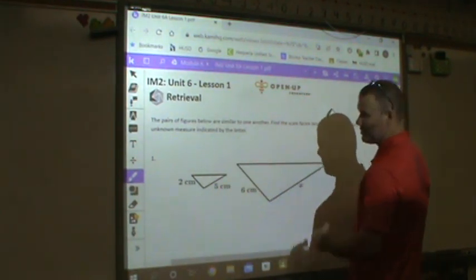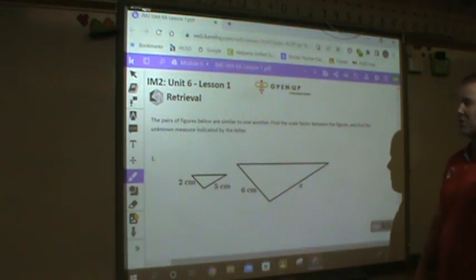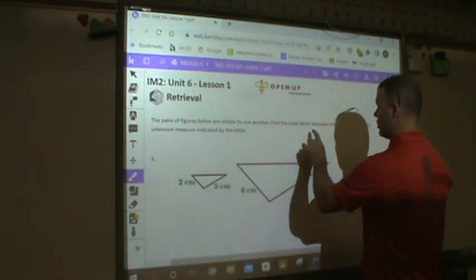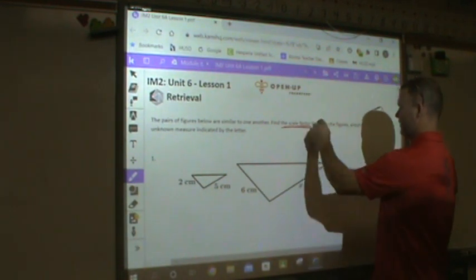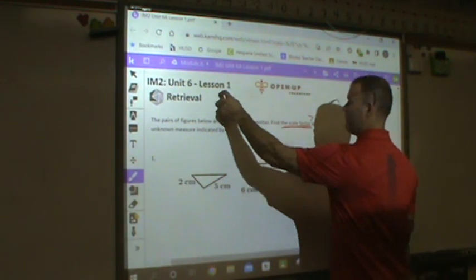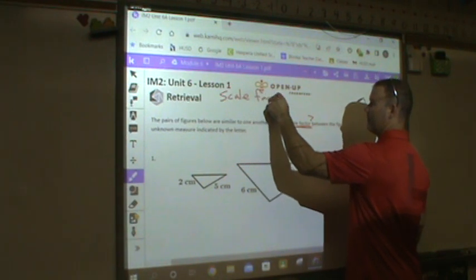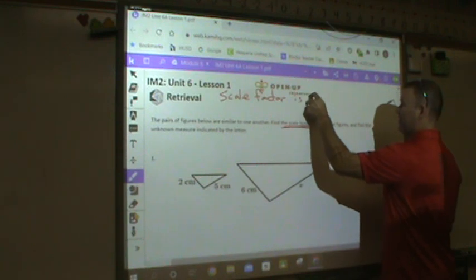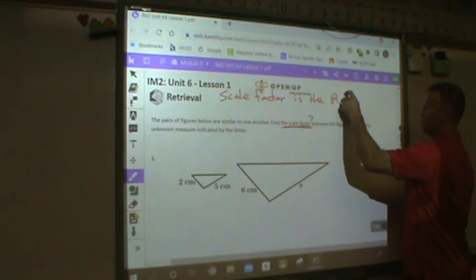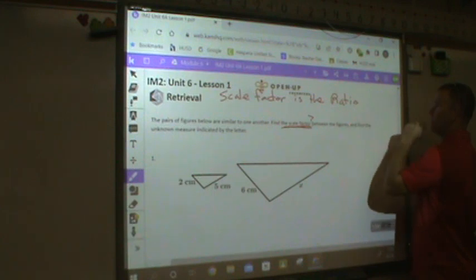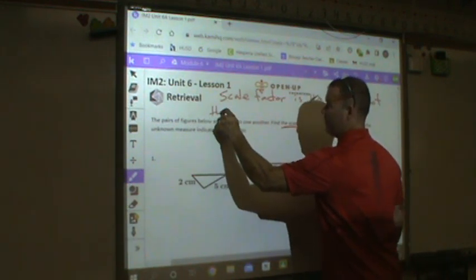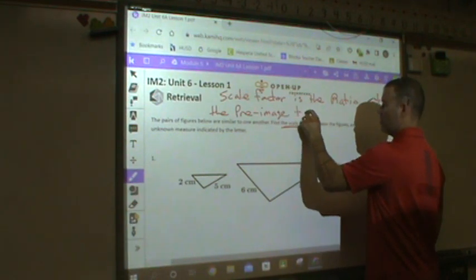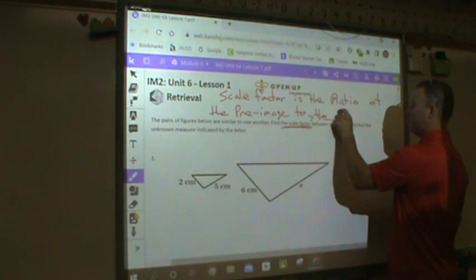The pairs of figures below are similar, so it's telling me that they're similar. They're triangles. They're orientated the same way. I don't have to guess if they're similar. They are. Find the scale factor between figures and find the unknown measure. What is a scale factor? Find the what. What is a scale factor?